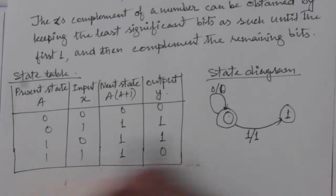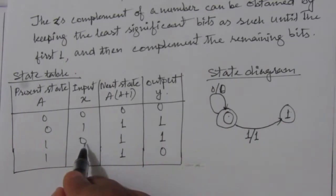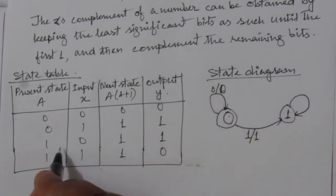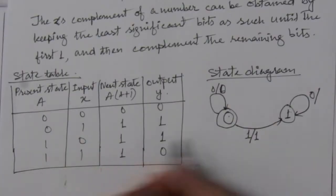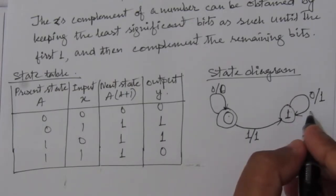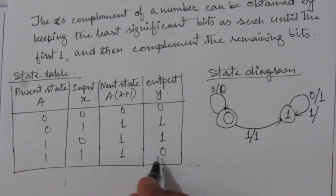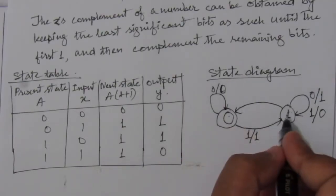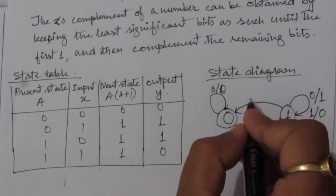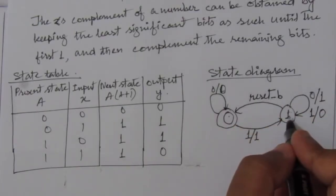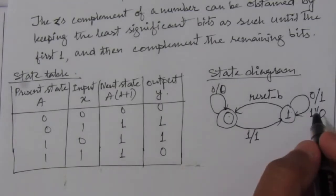When present state is 1 and input is 0, it remains in state 1 and the output is 1. When present state is 1 and input is 1, the next state remains 1 and the output is 0. We also have to define a reset state: when reset_b is asserted, there will be a transition from state 1 to state 0. So this is the complete state diagram.